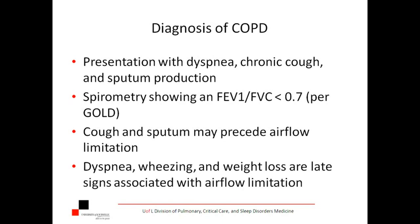Nevertheless, 0.7 is really easy to keep in mind and is what we use. This is the GOLD criteria, what we use in clinical trials when we enroll people, and what you're going to see on the boards — less than 0.7 is obstructive. What's really interesting is that symptoms like cough and sputum may actually precede any airflow limitation. A person might have a cough for several weeks and be making sputum, but PFTs look pretty normal.